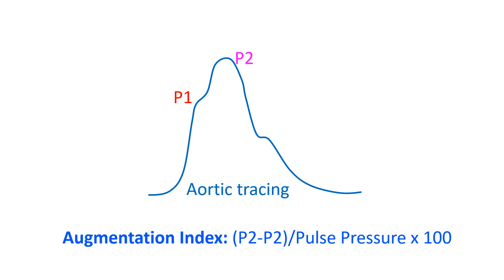The aortic pressure tracing has two systolic peaks, P1 and P2, of which P2 becomes more prominent after the age of 35 years. The difference between P2 and P1, expressed as a percentage of pulse pressure, is the augmentation index.